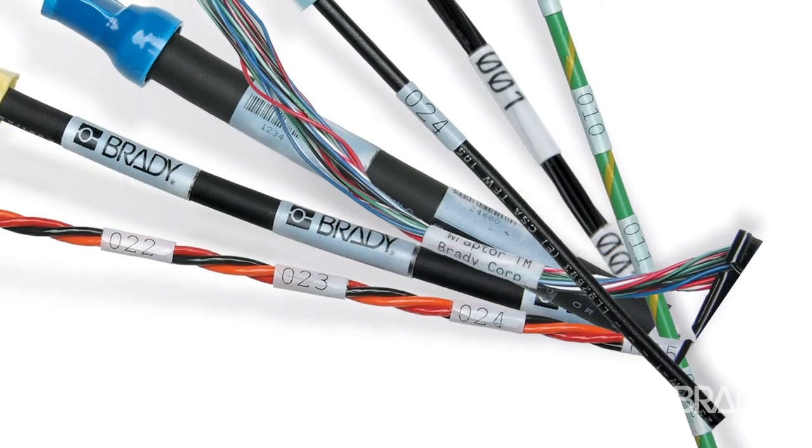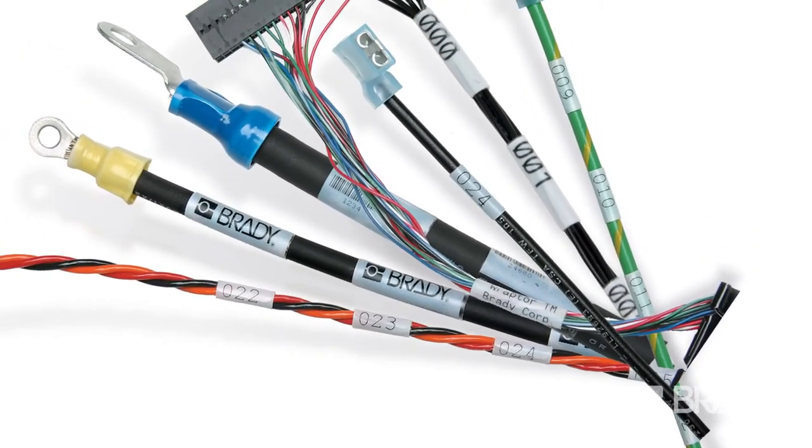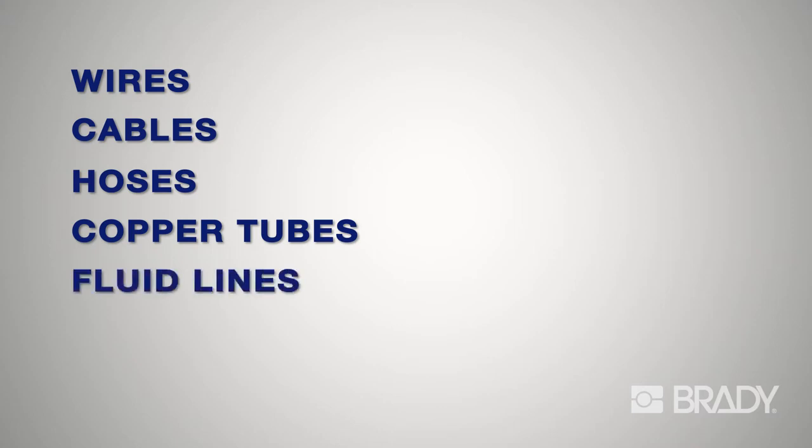And the Raptor A6500 works equally well on square jackets, most wire bundles, and a variety of other materials used for wires, cables, hoses, copper tubes, fluid lines, and composite rods.